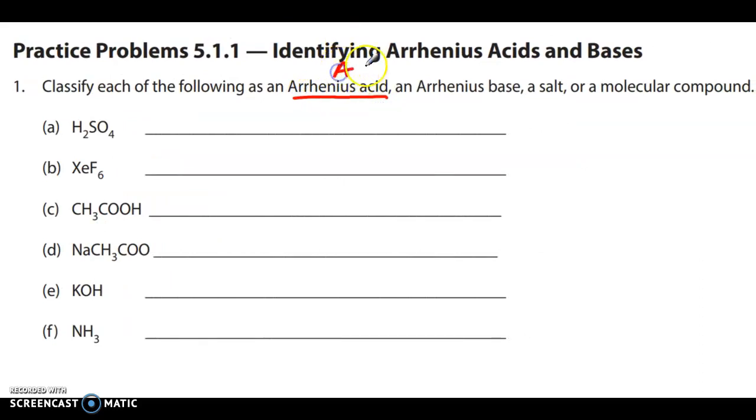An Arrhenius acid, which means I'm going to use an A for that. Arrhenius base, which I'll use a B. Salt, so you can say, I'm going to put an I for ionic compound. Or molecular compound, remember. So ionic compounds is a metal, just to remind ourselves, with a non-metal ion.